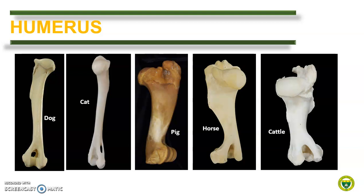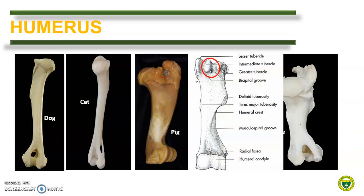Now let us compare the humerus. Note that the images are not shown to actual size relative to the other animals' bones. In dogs, one distinguishing feature is the presence of the supratrochlear foramen; no structures pass through this foramen and it is present only in dogs. In cats, the supracondylar foramen is present at the medial epicondyle — the median nerve and the brachial vessels pass through it. In pigs, the lateral or greater tuberosity almost converts the bicipital groove into a foramen. In the horse, the humerus can be identified by the presence of an intermediate tubercle at the bicipital groove.